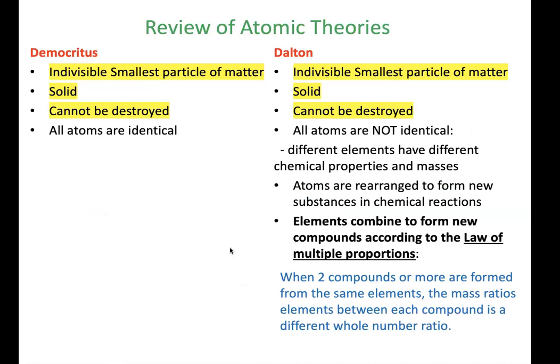Reviewing the two models: Democritus and Dalton both agreed that atoms are indivisible, the smallest particle of matter, solid, and cannot be destroyed. However, Democritus said all atoms are identical, while Dalton clarified that only atoms of the same element are identical — different elements have different chemical properties, masses, and sizes. Dalton added that atoms are rearranged in chemical reactions and that elements combine according to the law of multiple proportions.